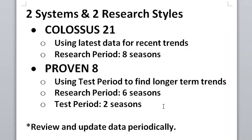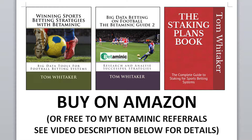A key thing to add is to review and update data periodically, especially for the Colossus 21, because that's really focusing on the latest data, while the Proven Eight is looking for longer-term trends. The Colossus 21 was from my first book, Winning Sports Betting Strategies with Betaminik, and the Proven Eight was in my second book, Big Data Betting on Football: The Betaminik Guide 2.